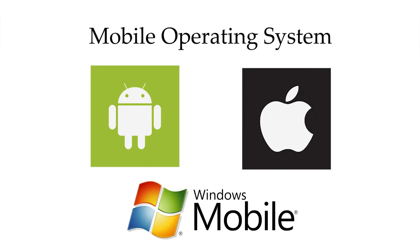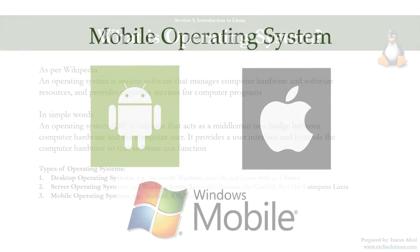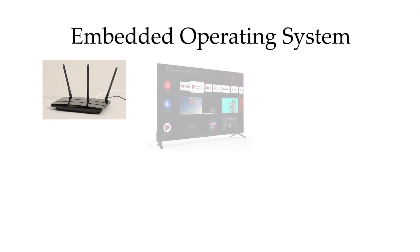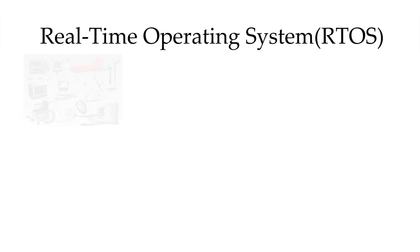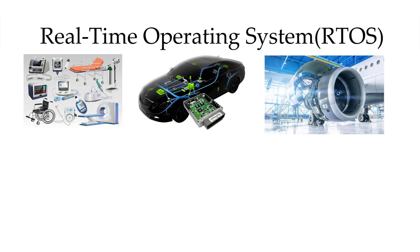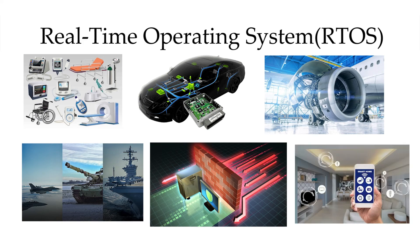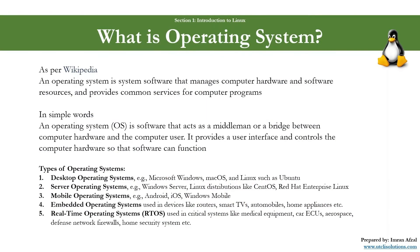Then there are mobile operating systems — for example Android, iOS, and Windows Mobile. If you have a Samsung phone you have the Android operating system; if you have an Apple phone you have iOS; if you have a Microsoft phone you have Windows Mobile. Then there are embedded operating systems, used in devices like routers, smart TVs, automobiles, and home appliances. And then you have real-time operating systems, in short RTOS, used in critical systems like medical equipment, car ECUs, aerospace, defense, network firewalls, and home security systems.